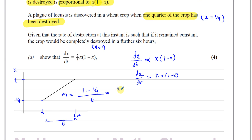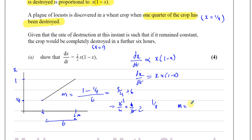That gives us (3/4) divided by 6 hours, which is (3/4) times (1/6), giving us 1/8. So I know the gradient of this graph is 1/8, and we know that is basically dx/dt. So dx/dt is equal to 1/8.